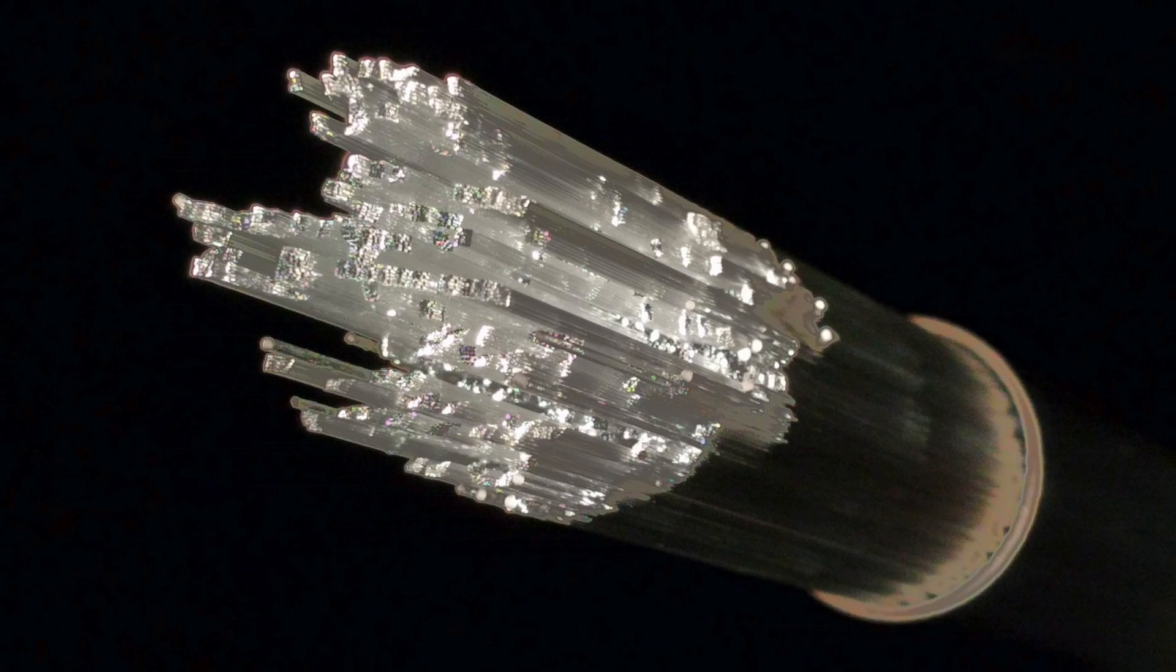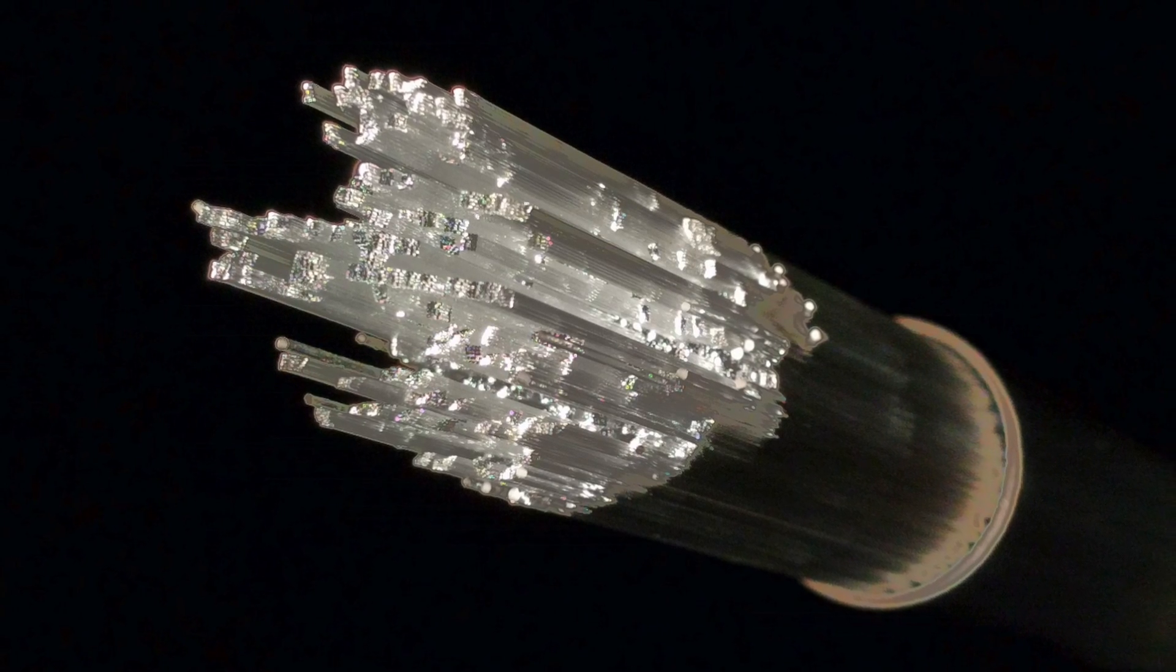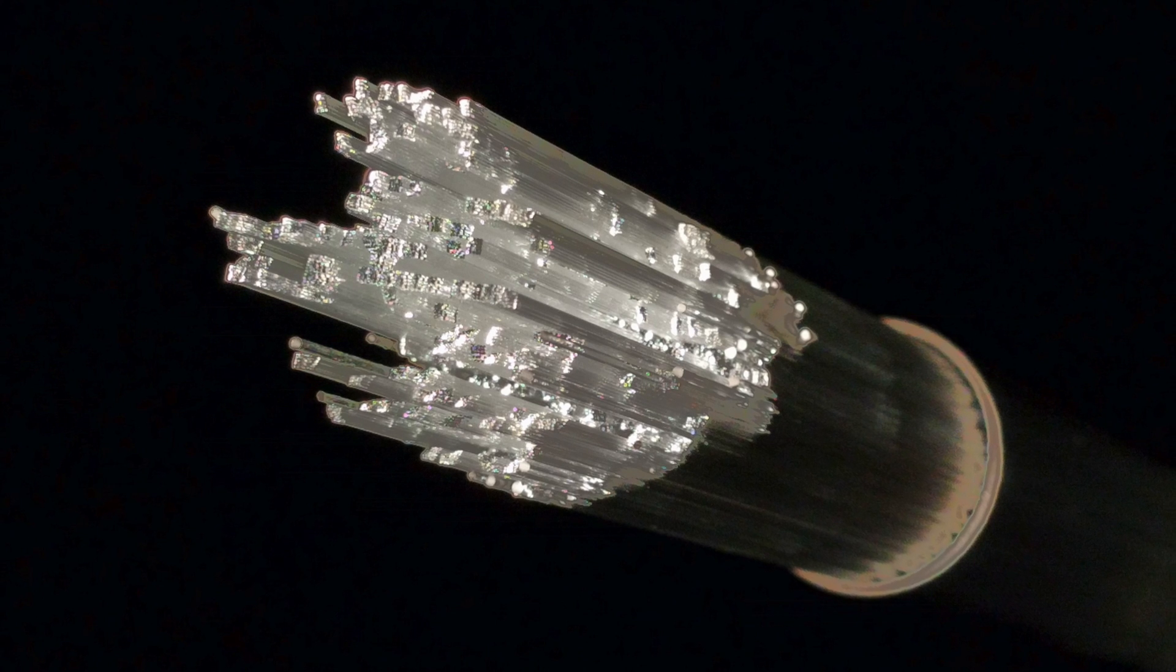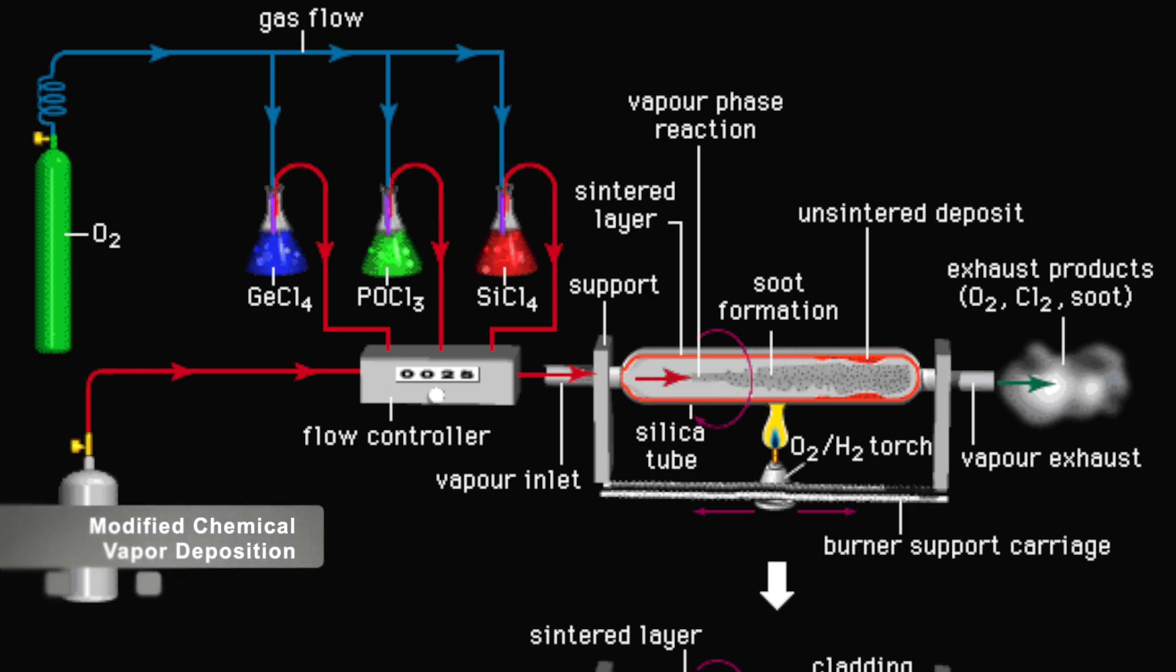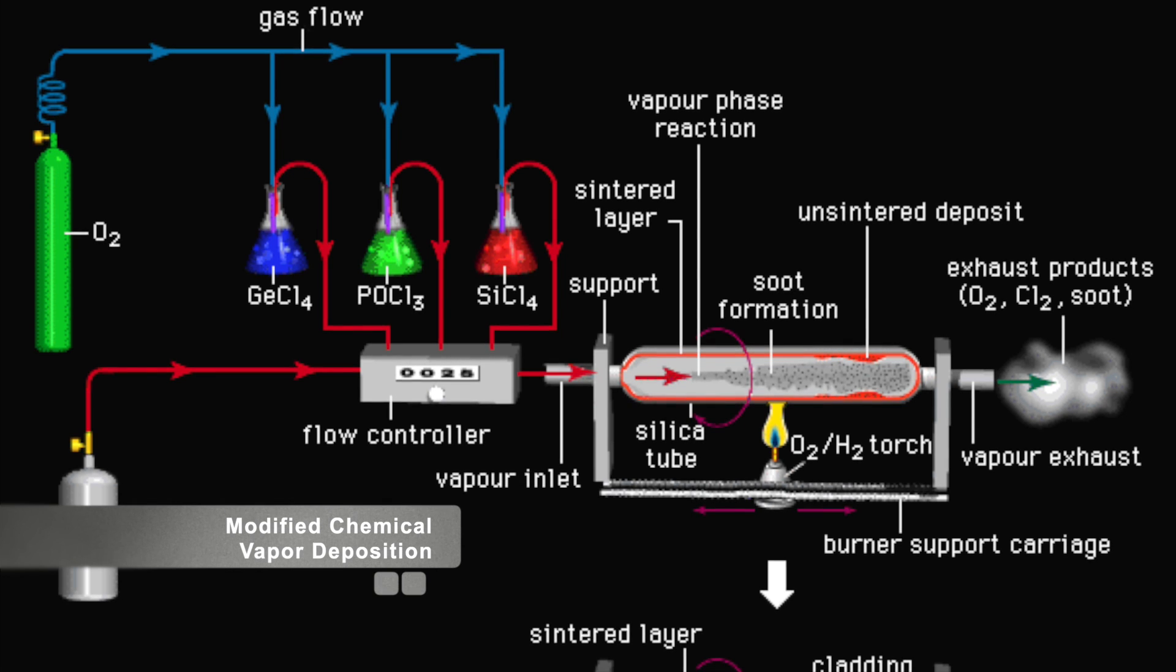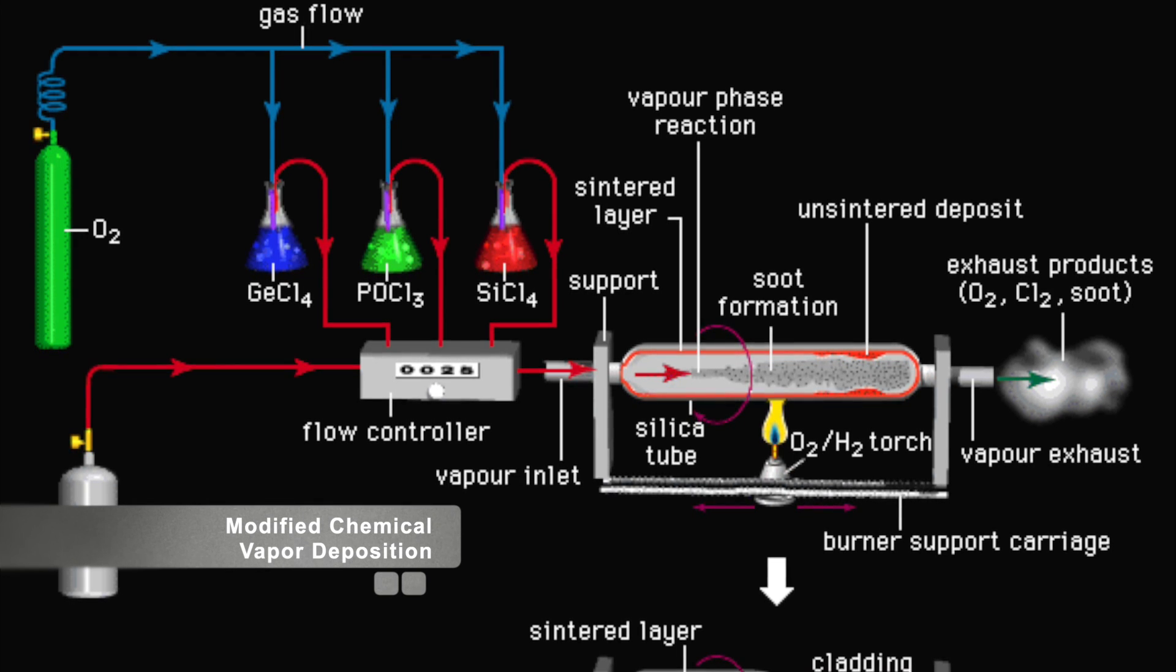Next, we move on to the creation of the preform, a large cylindrical piece of glass that will eventually be drawn into thin fibers. The preform is made using a process called Modified Chemical Vapor Deposition.